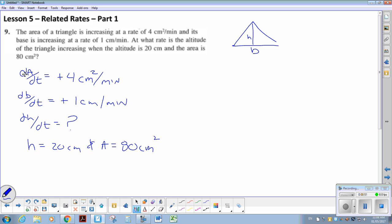This is just an area question. So we'll start with area, and it's one-half base times height. I know dA by dt, dB by dt, and I want to look for dH by dt.